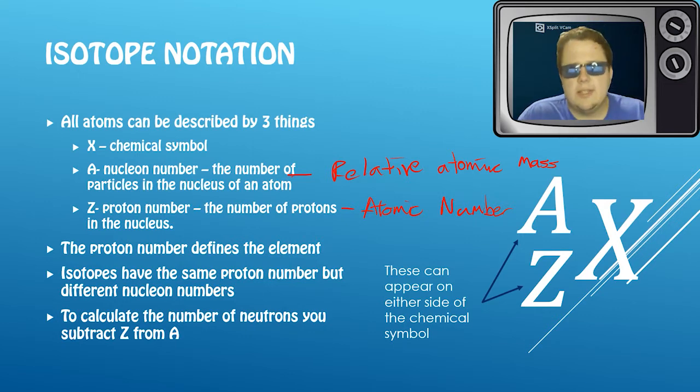To calculate the number of neutrons, you have to subtract Z from A. Now just take care, it doesn't have to be on the left-hand side, it can be the right-hand side. And if you look at some periodic tables, sometimes they have A and Z the other way up. A will always be bigger than Z, so that's just something to remember.